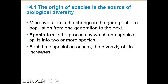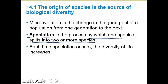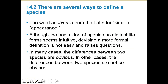Just to define species before we can talk about how we make new ones: microevolution is the change of the gene pool of a population from one generation to the next. Speciation is the process by which one species splits into two or more species. Each time speciation occurs, the diversity of life increases — so we get more species.